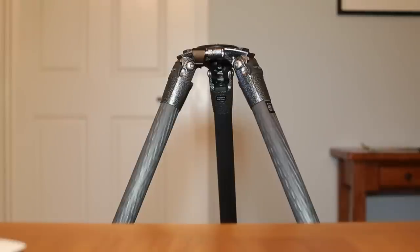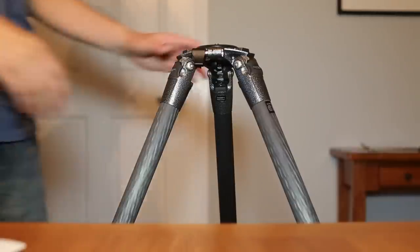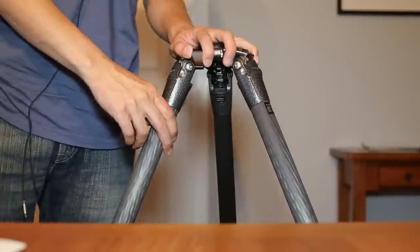This one happens to be the Gitso 3542 LS model, but this video will certainly apply to other new models of Gitso systematic tripods as well. So one of the main things they changed is they updated the whole top plate of the tripod.